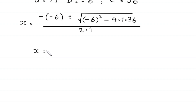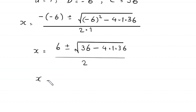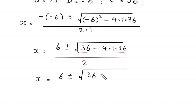Simplifying: x equals 6 plus or minus the square root of 36 minus 4 times 1 times 36, divided by 2. Under the radical, we can factor out 36: x equals 6 plus or minus square root of 36 times (1 minus 4), divided by 2.